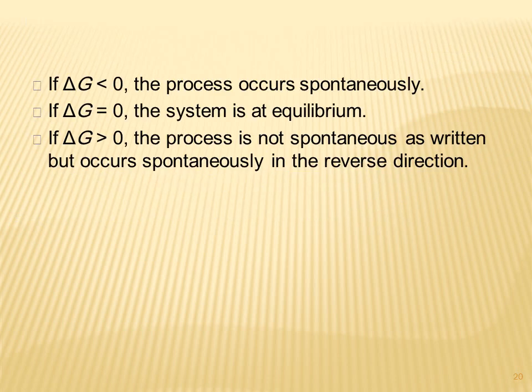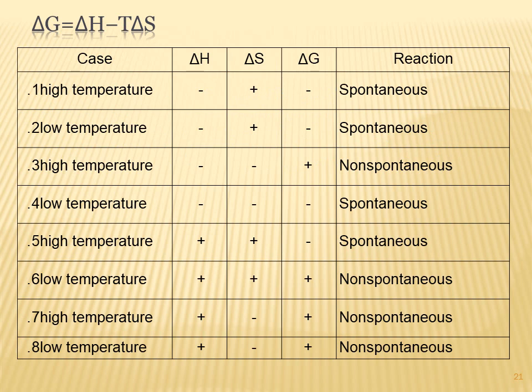If ΔG is less than zero, the process occurs spontaneously. If ΔG equals zero, the system is at equilibrium. If ΔG is greater than zero, the process is not spontaneous as written but occurs spontaneously in the reverse reaction. A table summarizes the conditions for free energy based on the signs of ΔH and ΔS.